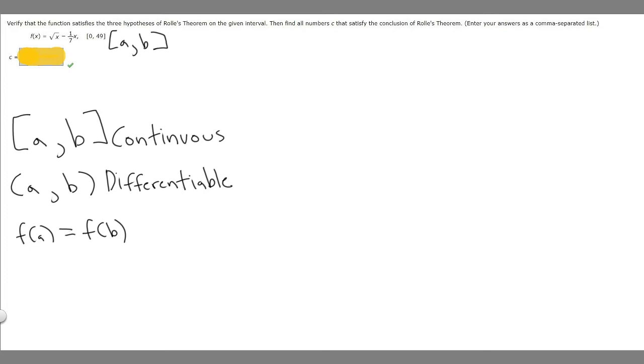So first let's look at the three hypotheses and see if our function satisfies this. We have the function f(x) equals the square root of x minus 1 over 7x and we're given this interval 0 to 49.